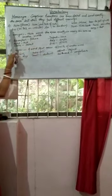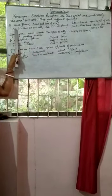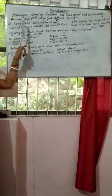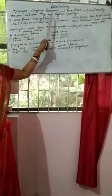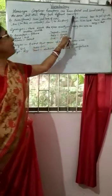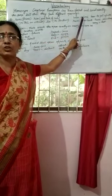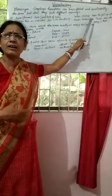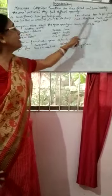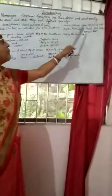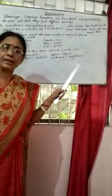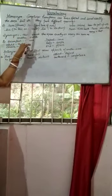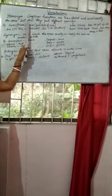Lie — L-I-E — is spelled and pronounced the same but has two meanings: to tell an untruth, as in 'Don't lie,' and to lie down, as in 'She is lying down.' Bear — B-E-A-R — is an animal, and also means to put up with, as in 'I can't bear it.' Bank — B-A-N-K — means a river bank, and also a place where you keep money. These words are called homonyms — a type of homophone where spelling and pronunciation are the same, but only the meaning is different.